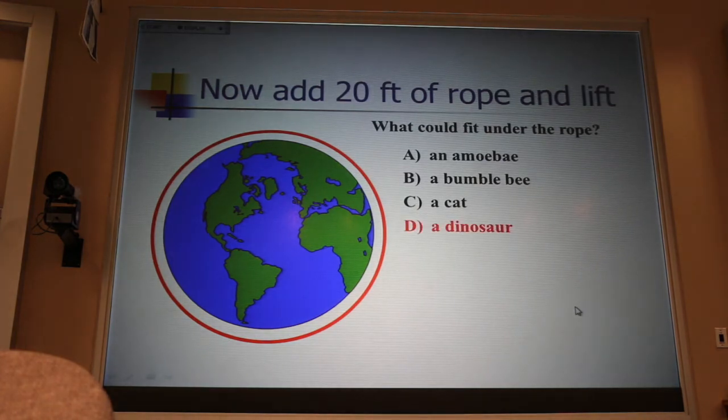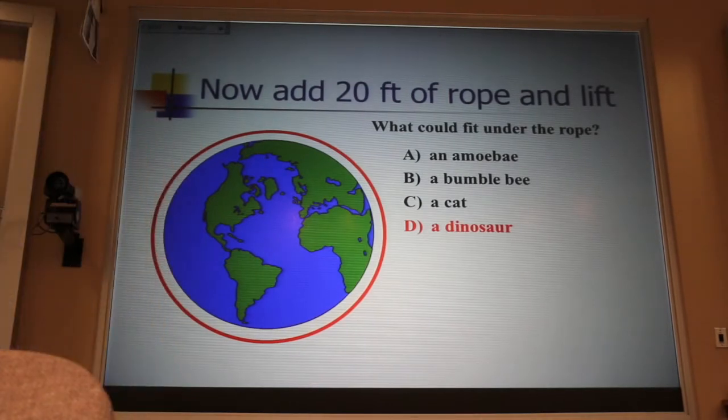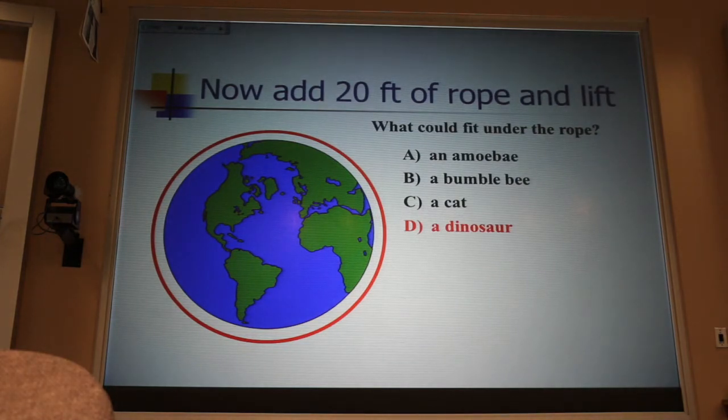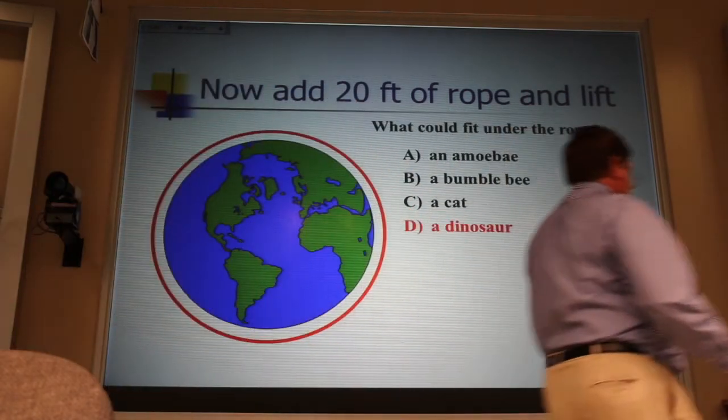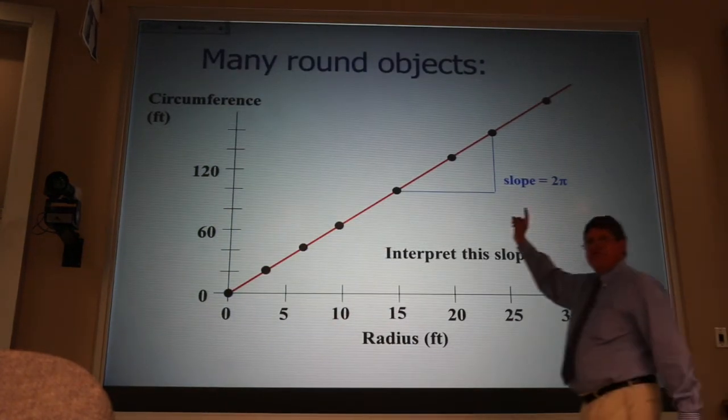And the rest of you are wondering, how can that be? 20 feet is negligible compared to the distance around the earth. It's got to be an amoeba. It can't be a dinosaur. It's a dinosaur. And the answer is tied up with the interpretation of this slope.